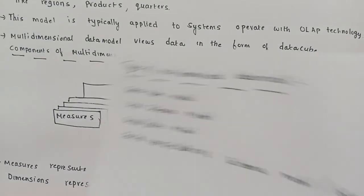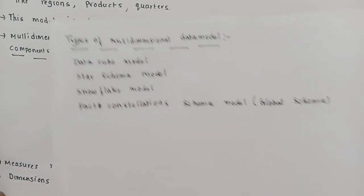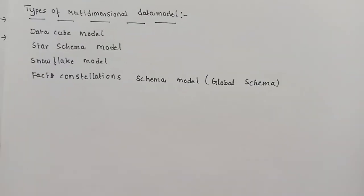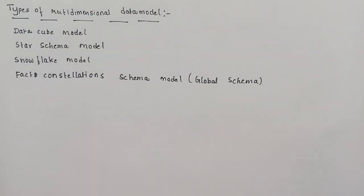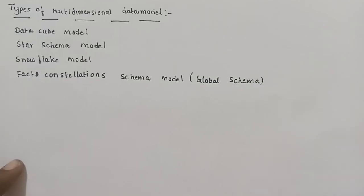The types of multi-dimensional data cube models are: star schema model, snowflake model, and fact constellation schema model. We will discuss these in detail in the next video.